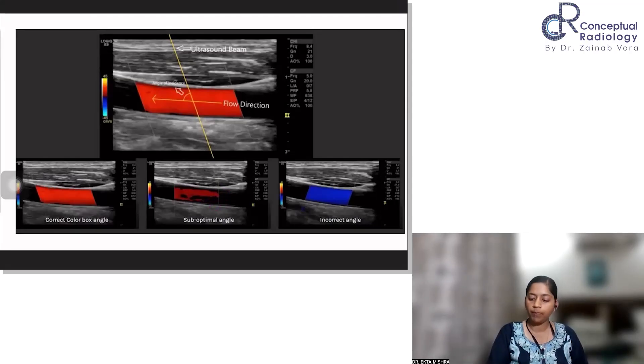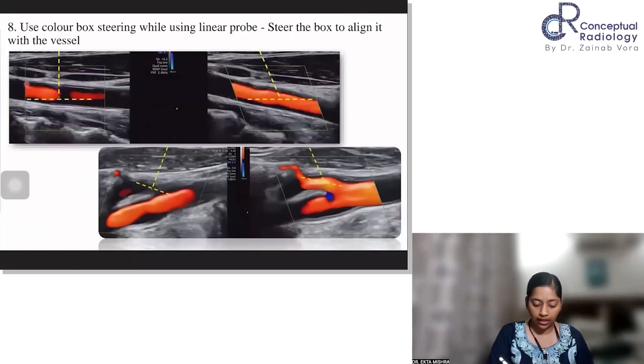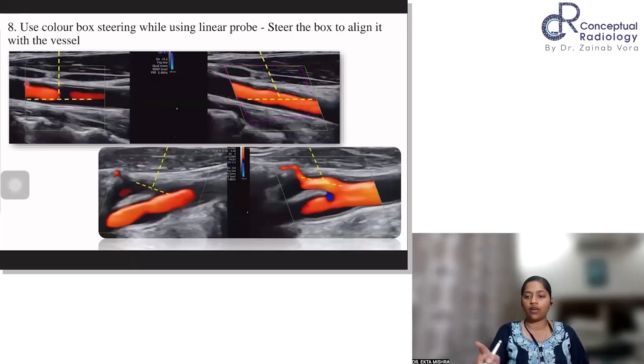So to avoid this patchy appearance, steer your box. So how does the steering help? See, this is a straight box and the angle of insonation is 90 degrees. So we are not seeing flow here. Is this flow which is not appreciated here because of a pathology? No, it's not because of a pathology. It's because of the mechanical or the technical factors. So if you angulate your box and now it forms a parallelogram, you see how nicely the vessel is filled completely now. So this is what we want.